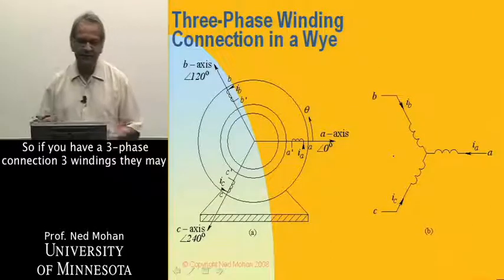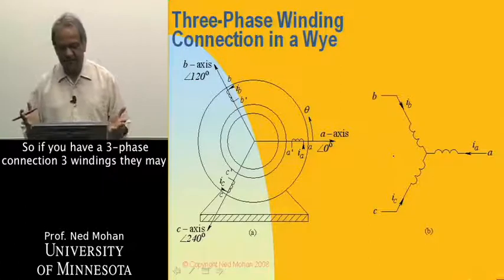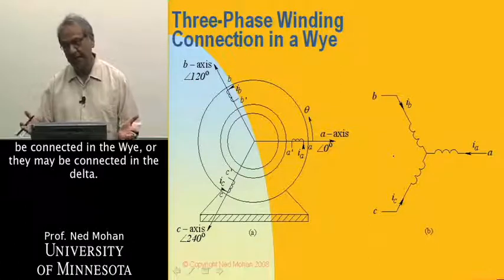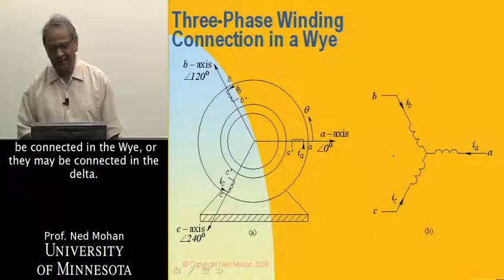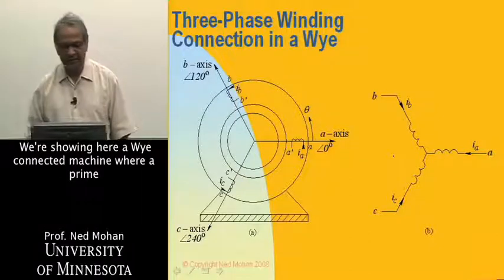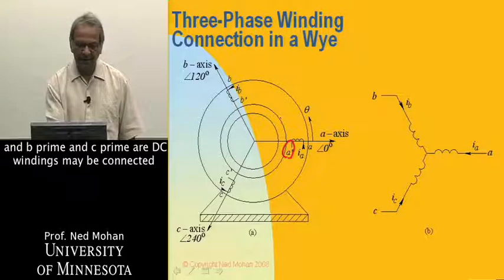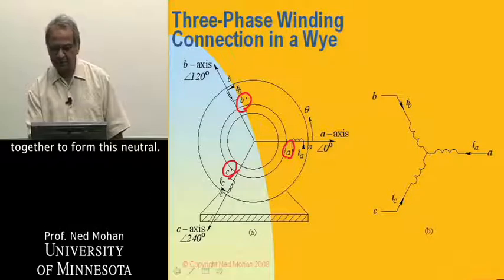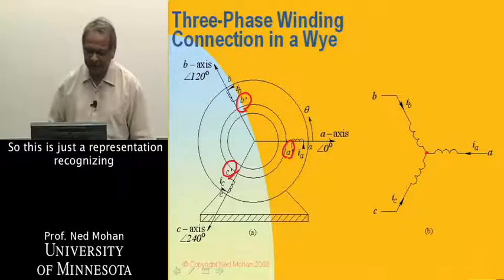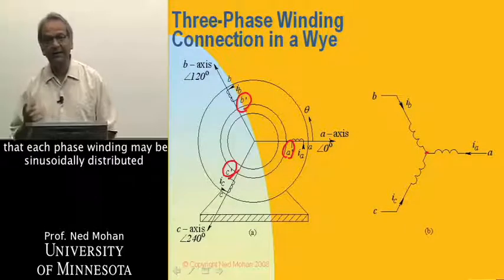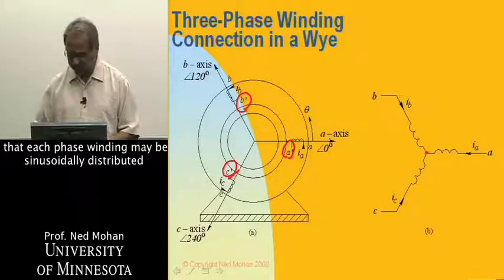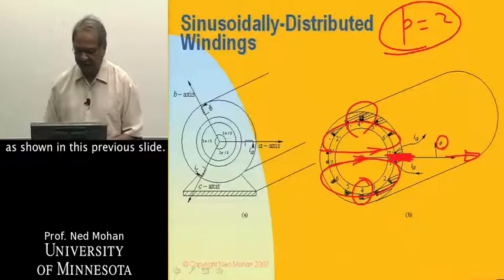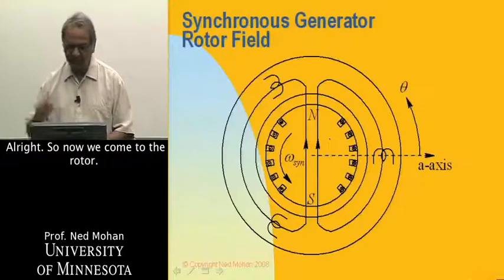So if you have a three-phase connection, three windings, they may be connected in a Y, or they could be connected in a delta. I'm showing here a Y-connected machine where A prime and B prime and C prime of these three windings may be connected together to form this neutral. So this is just a representation recognizing that each phase winding may be sinusoidally distributed as shown in this previous slide.